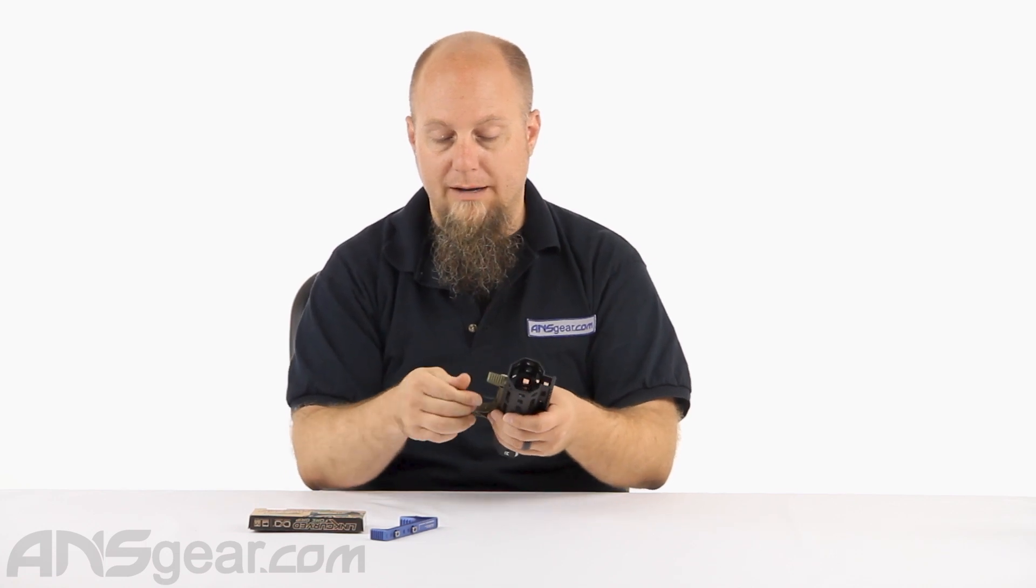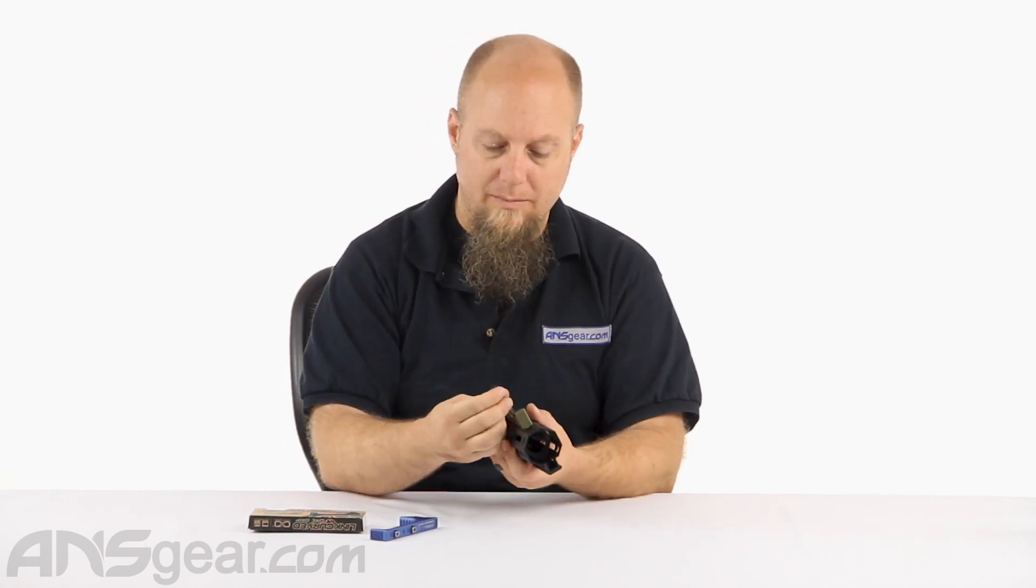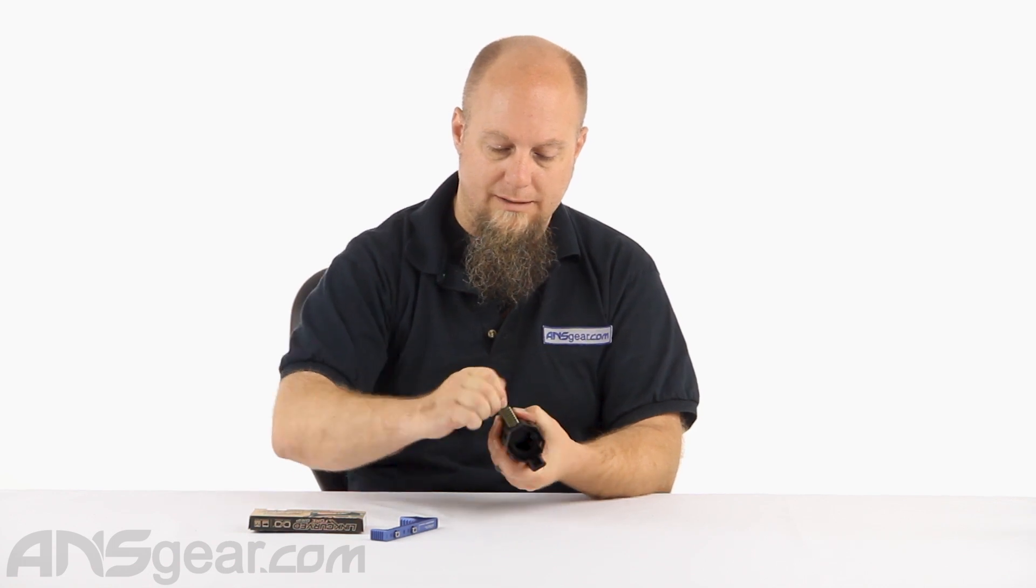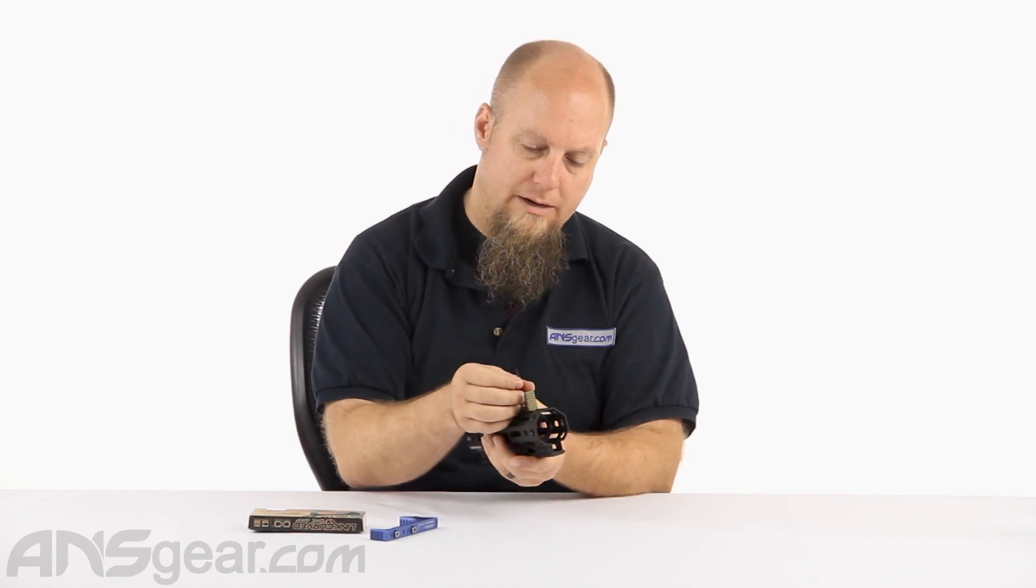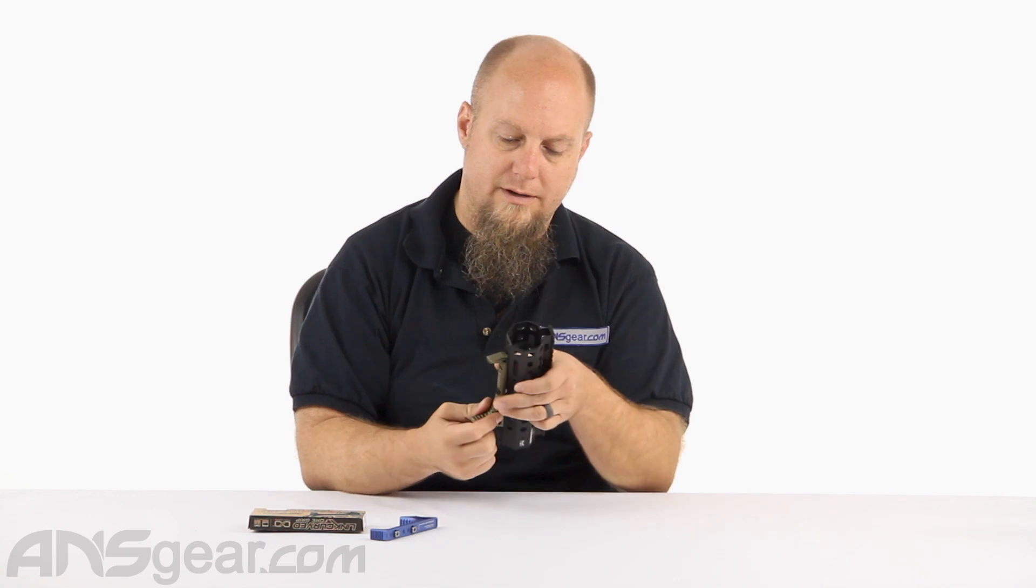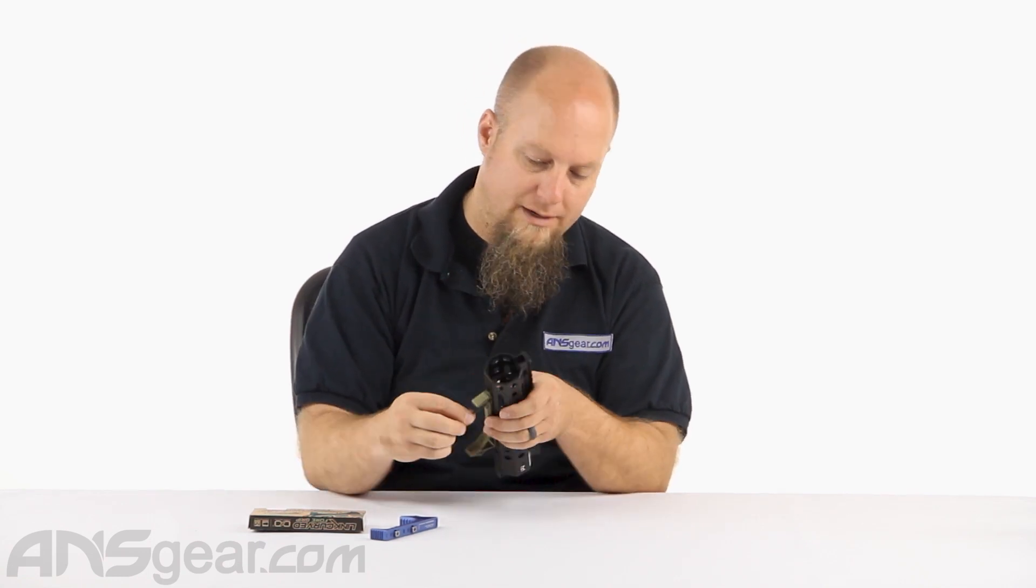And again, these are compatible with M-Lock or KeyMod. Either way you can do it. Doesn't matter. They will fit either one, but mounting and unmounting, pretty simple stuff. As long as it rotates out of the way and allows you to pull it on through. So there you go. Link curved foregrips in two different colors right here. We've got the Blue Line and the FDE line. They're from Strike Industries. They are durable. They are rugged. They are easy to mount up. They are for M-Lock or KeyMod. Either way, get them on your guns. Give yourself that extra support. Get it at ANSgear.com.